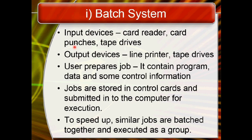In a batch system, input and output devices used include card readers, card punches, and tape drives as input devices, and line printers and tape drives as output devices. The user prepares a job — a job contains a program, data, input data, and some control information. These jobs are stored in control cards, and the cards are submitted to the computer for execution. The computer reads the jobs from the cards using the card reader and executes them.